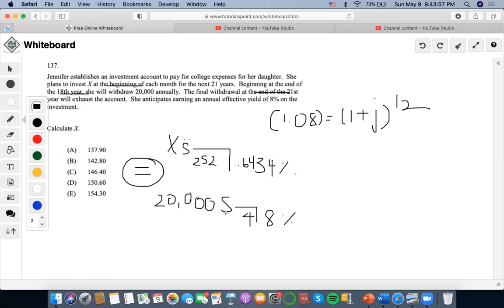Entering $20,000 as the payment, 4 for the number of years, and 8% as the interest rate, with zero as the present value, I compute the future value. This gives us $90,122.24.